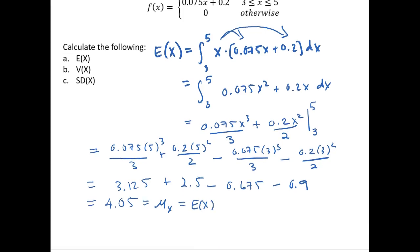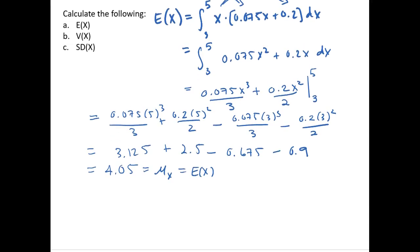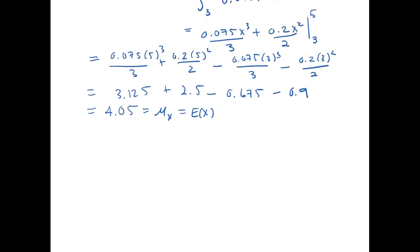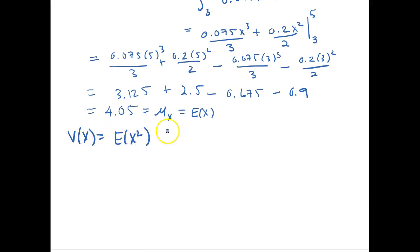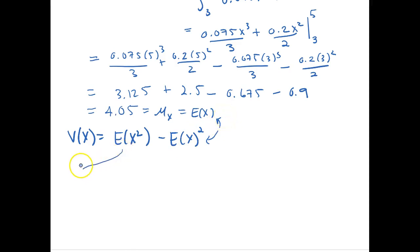To find the variance of x: the variance of a continuous random variable, V(x), is equal to the expectation of x squared minus the expectation of x, squared. We already know that E(x) is 4.05, but E(x squared) we still need to calculate.